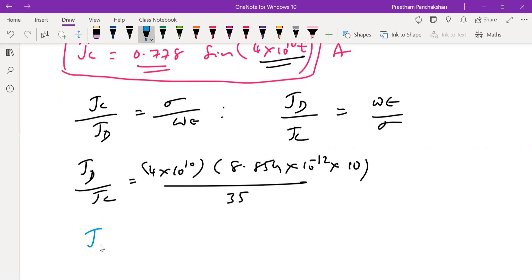So now ultimately we want Jd. Jd and also we have to multiply all these things. So that is going to be 4×10^10 × 8.854×10^-12 × 10 / 35.